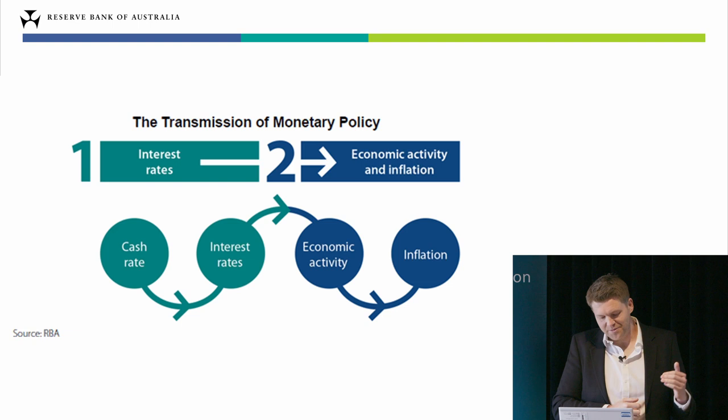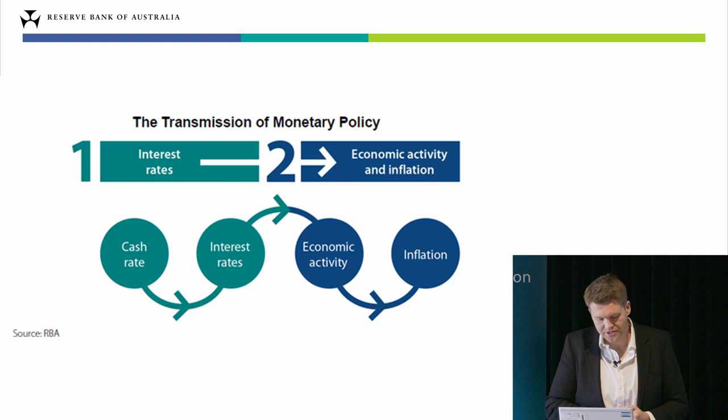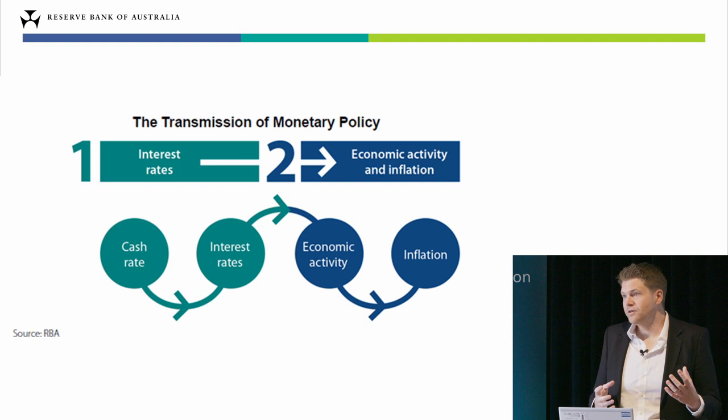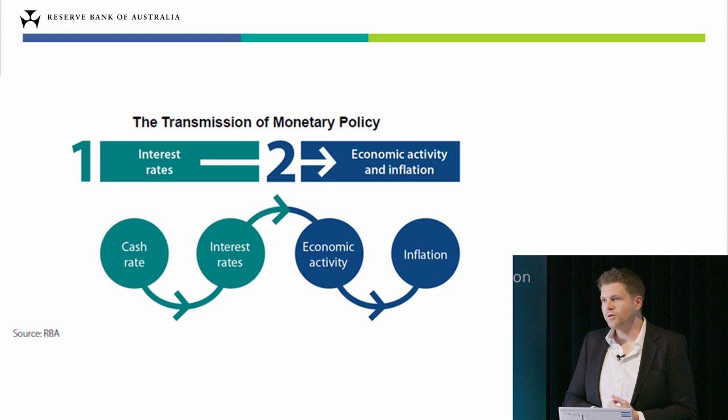The third and final step is that this decrease in aggregate demand then has an effect on inflation. This is a very stylized, textbook description of the policy transmission mechanism, and as I mentioned, in practice things are more complicated, but this way of thinking about it actually gets you quite far.